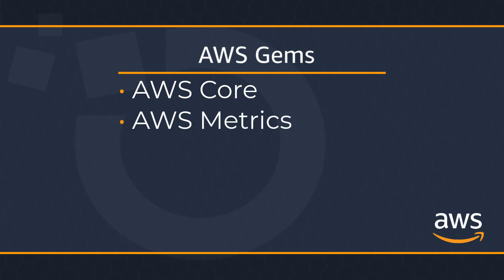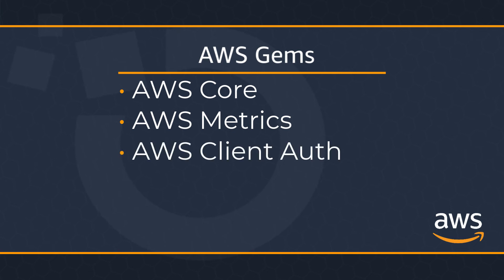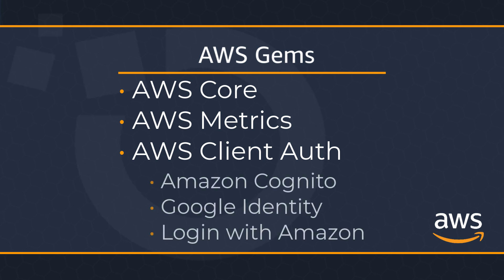AWS Metrics, which is used for reports and to aggregate metric data for real-time or batch analytics in AWS. AWS Client Auth, which provides OAuth sign-in authentication flows and fetches temporary AWS credentials using OpenID tokens. In essence, this GEM lets authenticated or anonymous users access AWS services. It provides authentication options using any of the following supported identity providers: Amazon Cognito user pool, Google identity, and login with Amazon.